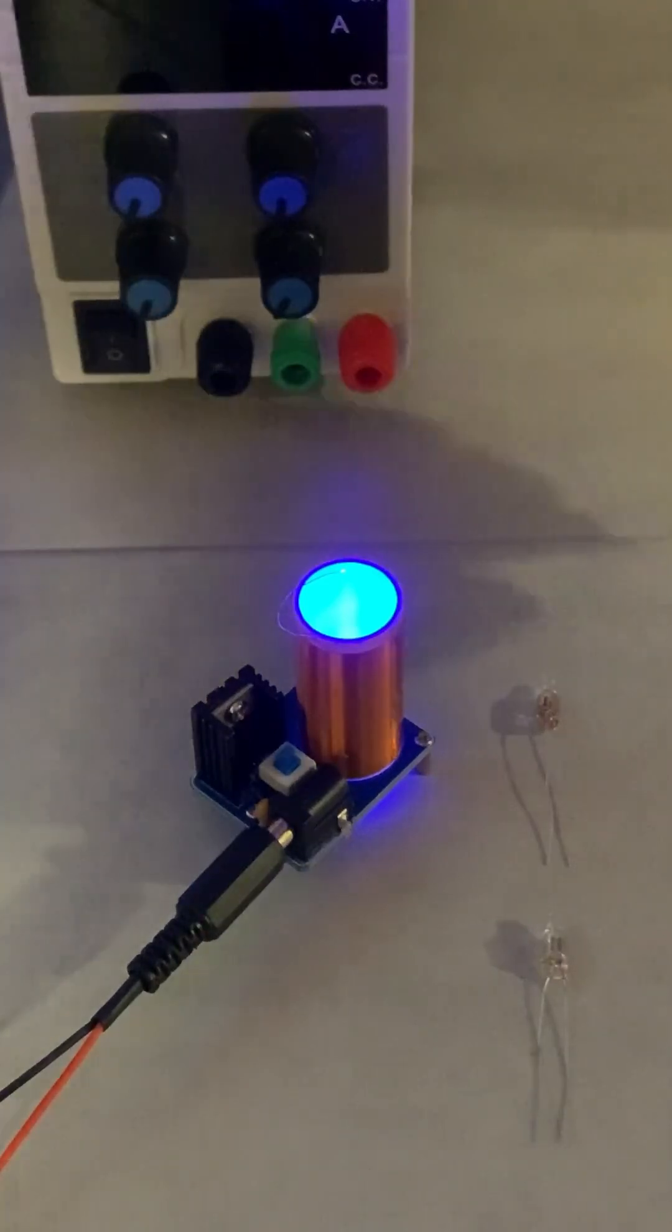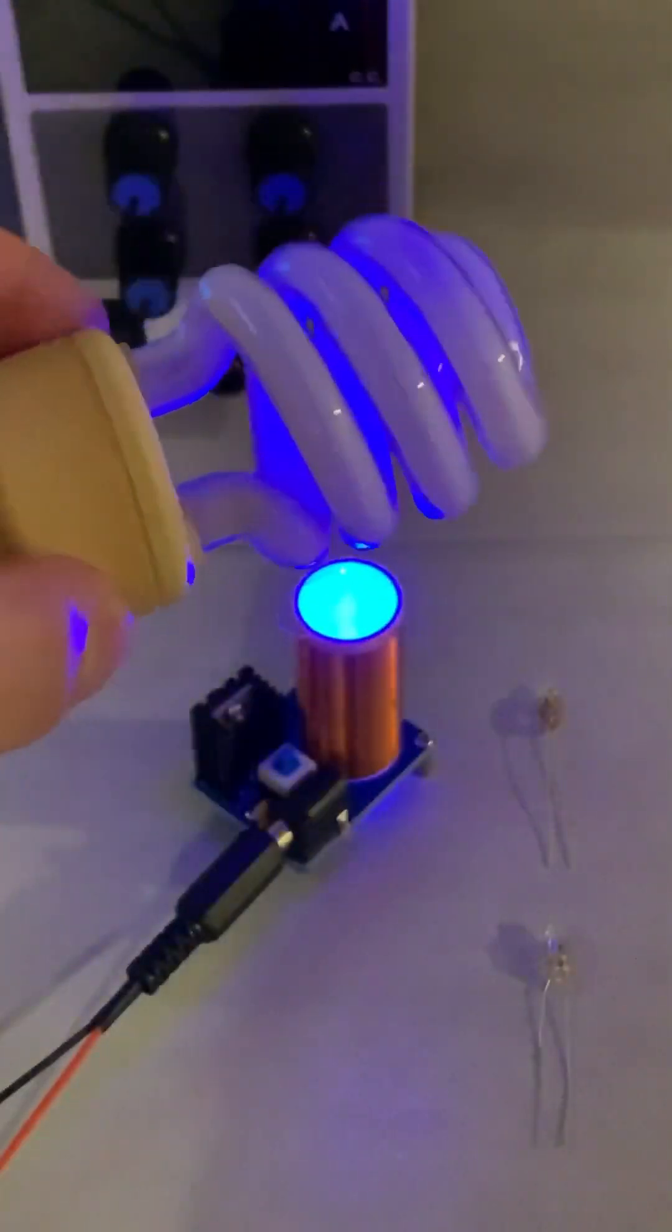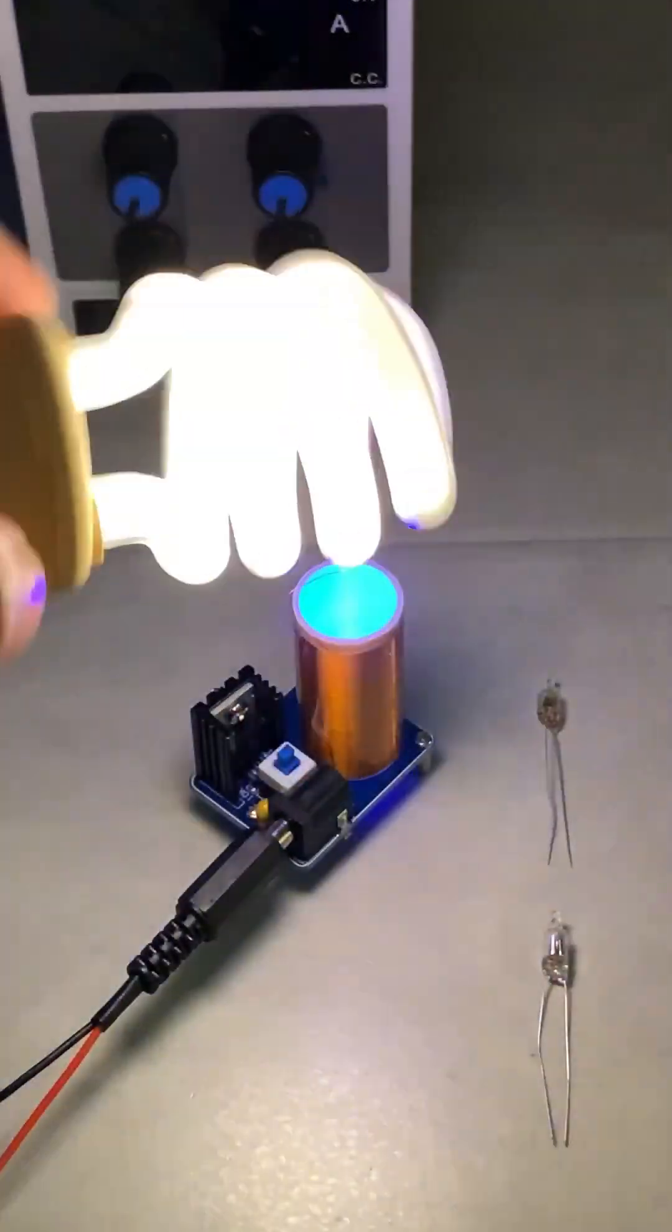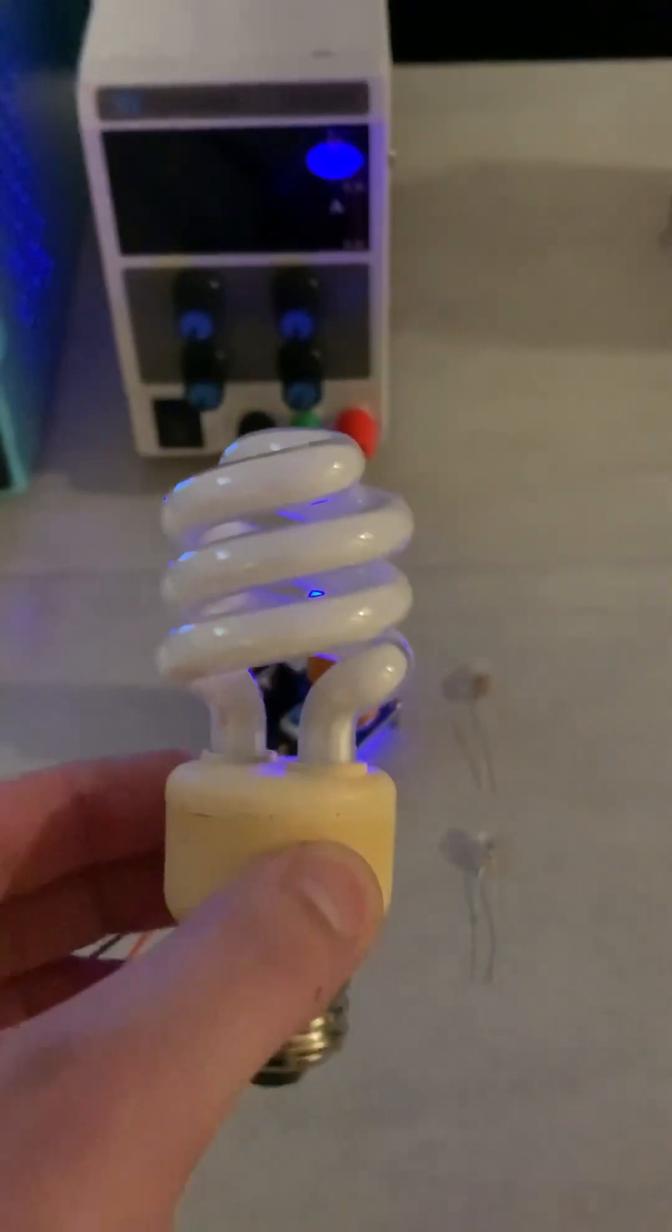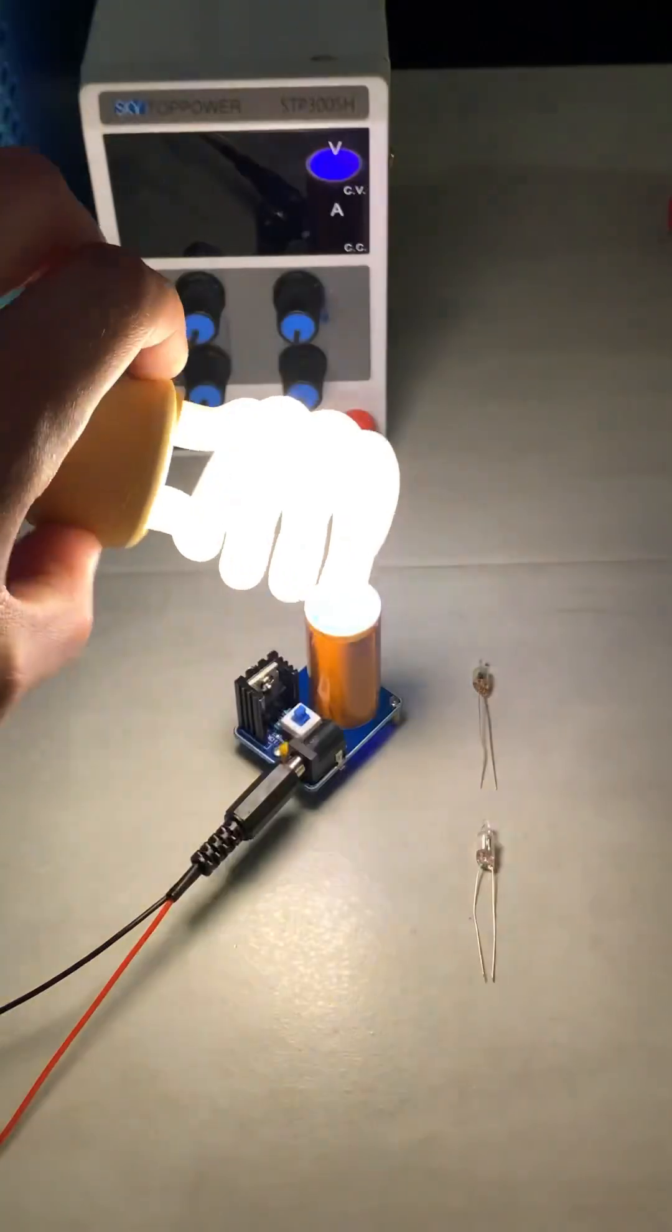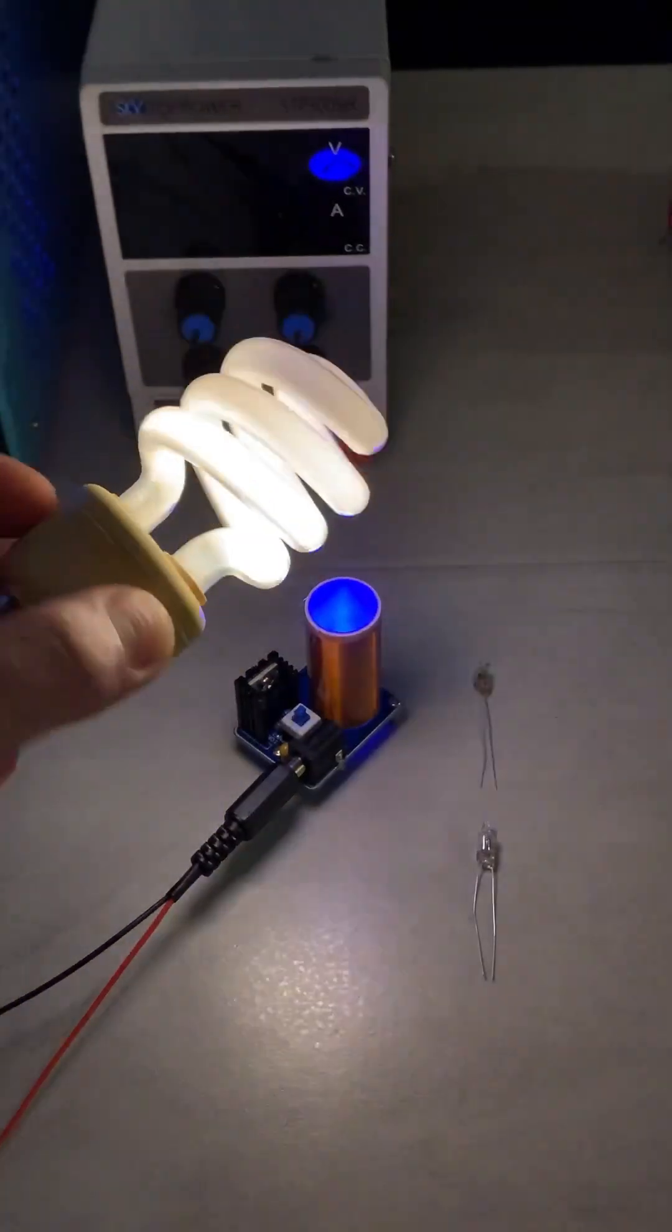With the lights turned off now, watch what happens when I hold this CFL light bulb next to it. Look at that. That is actually insane. And it was just $2 on AliExpress. I cannot believe it actually works. No wonder Nikola Tesla was so obsessed with this stuff.